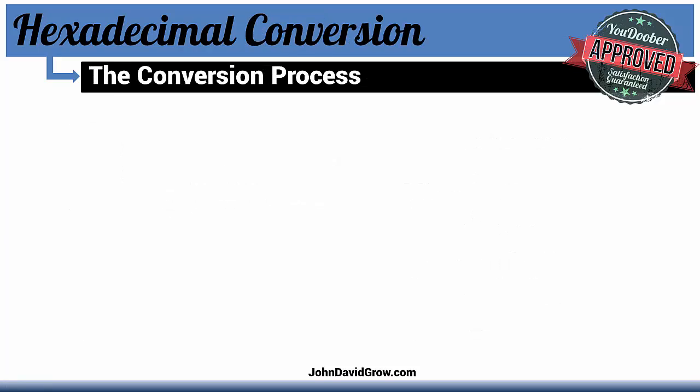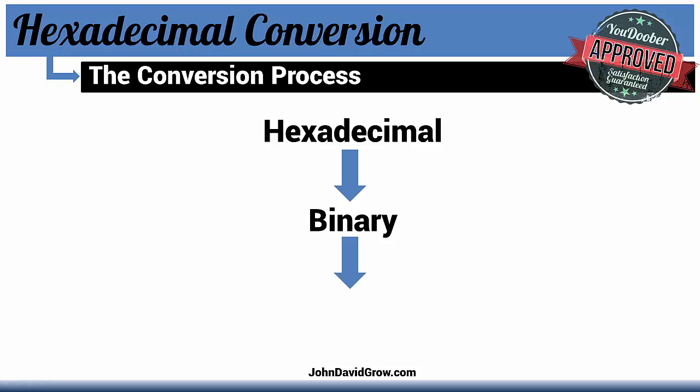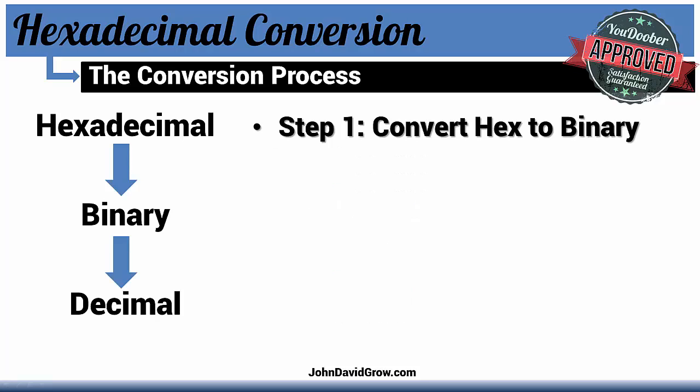Now let's look at the conversion process. What we're going to do is take a hexadecimal number and convert it into a binary number, and from that binary number convert it into decimal. The first thing we're going to want to do is convert the hex to binary. Here we have 5F in hexadecimal. As you remember from earlier, the nibble — we're going to make little nibble tables for each hexadecimal character.